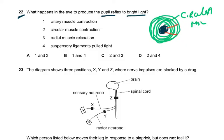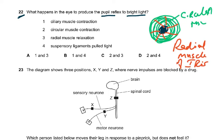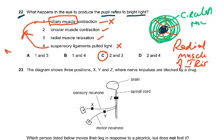The radial muscles of the iris and the circular muscles of the iris are the relevant structures for the pupil reflex. In bright light, the pupil becomes smaller — it constricts. The circular muscles contract and the radial muscles relax. The ciliary muscle and suspensory ligaments relate only to accommodation (near and distant vision), so the answer was C — only options two and three.